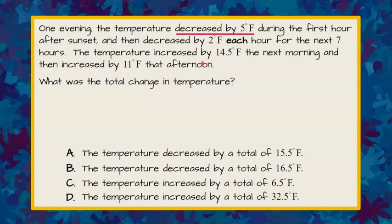First we're going to identify there's a bunch of things happening here, but the first thing that happens is the temperature decreased by 5 degrees. If I look at my answer choices, it's asking me if overall the temperature decreased or increased by a total. We have two choices for decreased and two choices for increased. So let's go back to our problem and do it step by step.